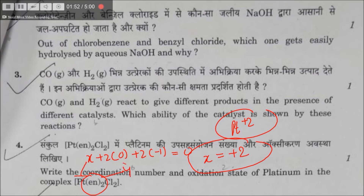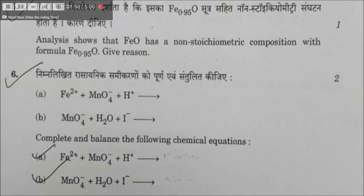Adding two chlorine atoms gives a total of six bonds, so the coordination number is six. For Fe₀.₉₅O, iron is present in a lesser amount — this is called the metal deficiency defect.